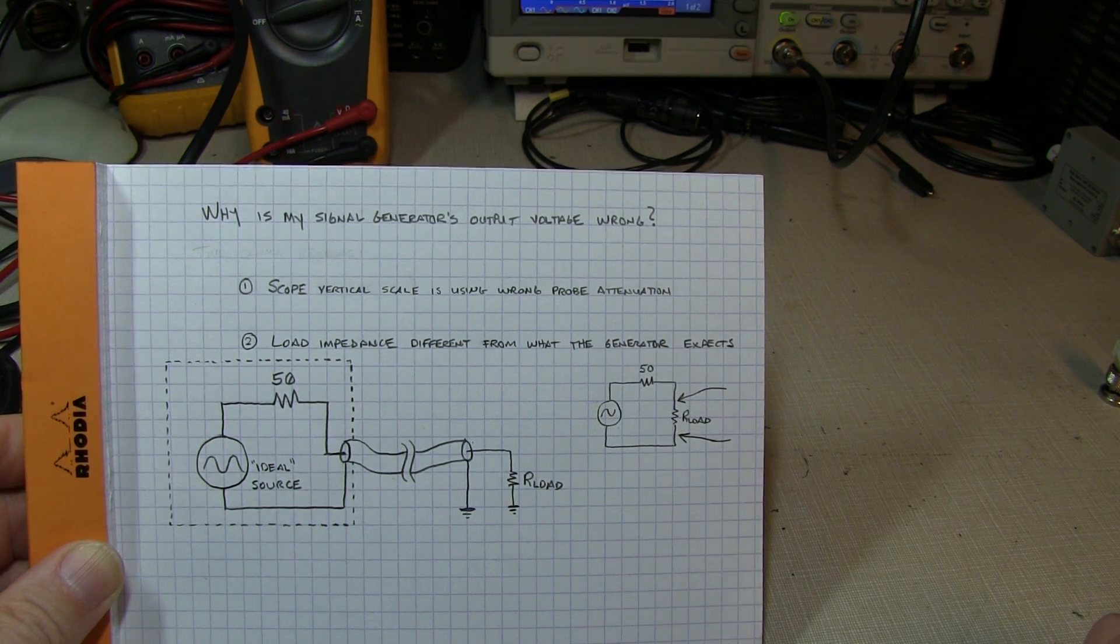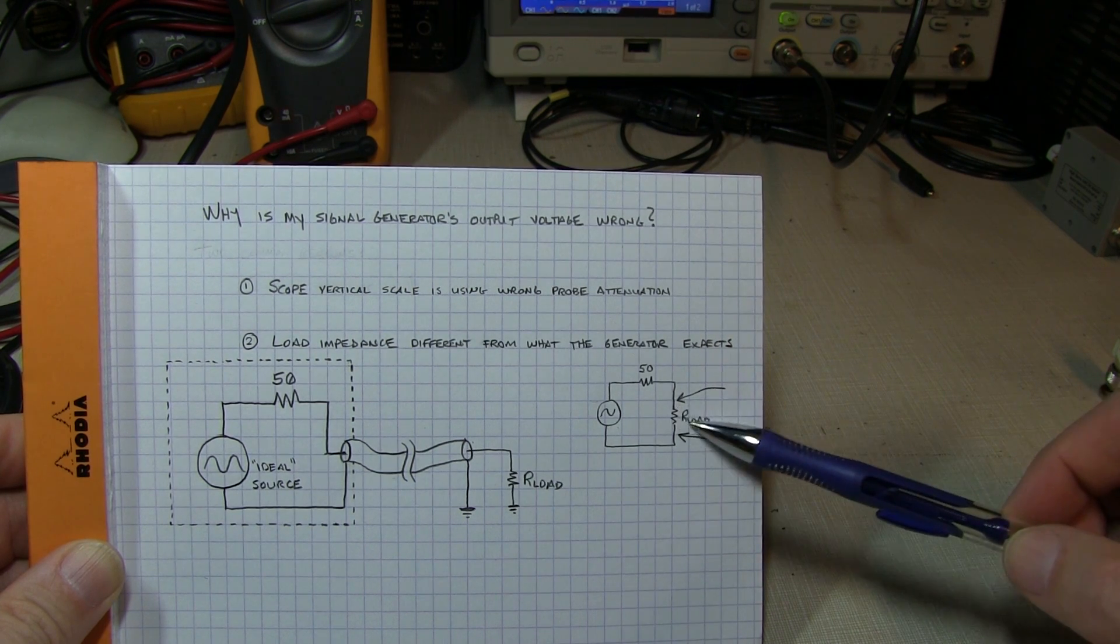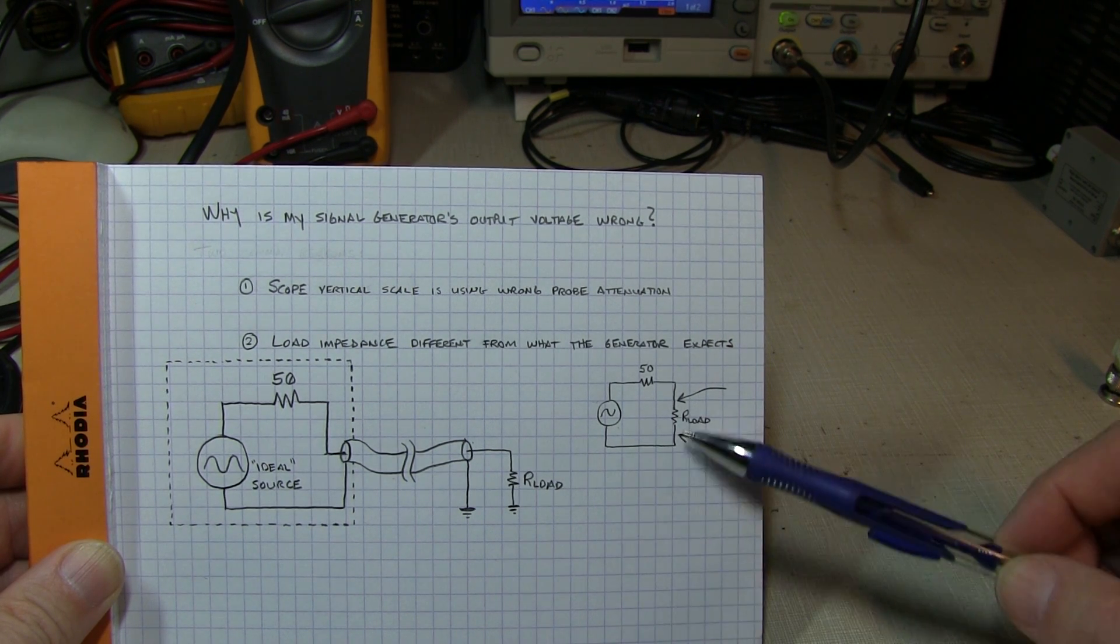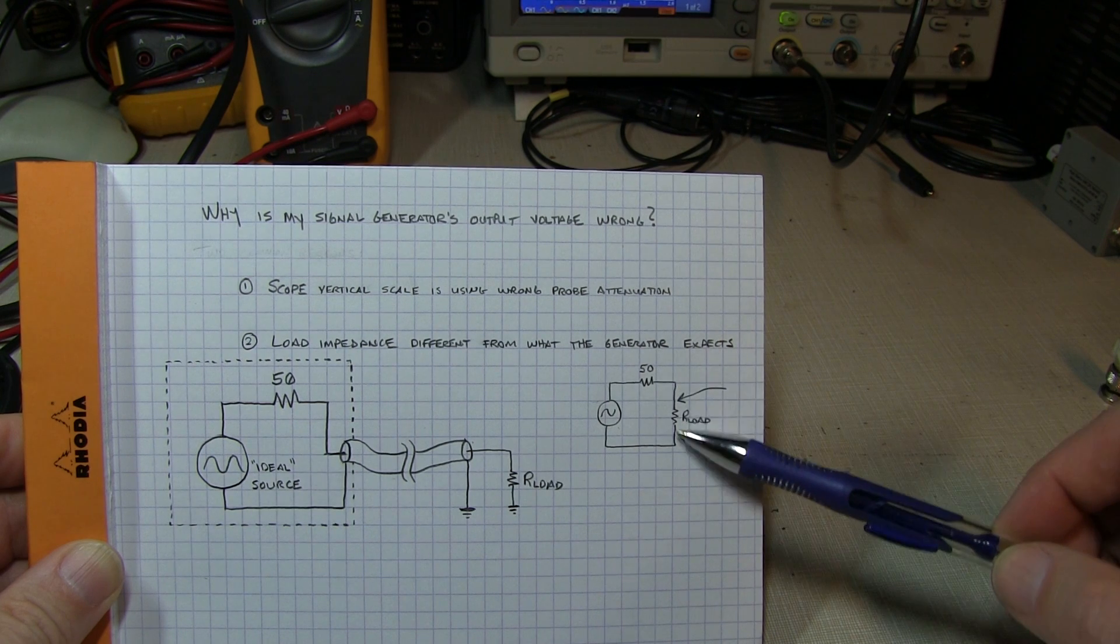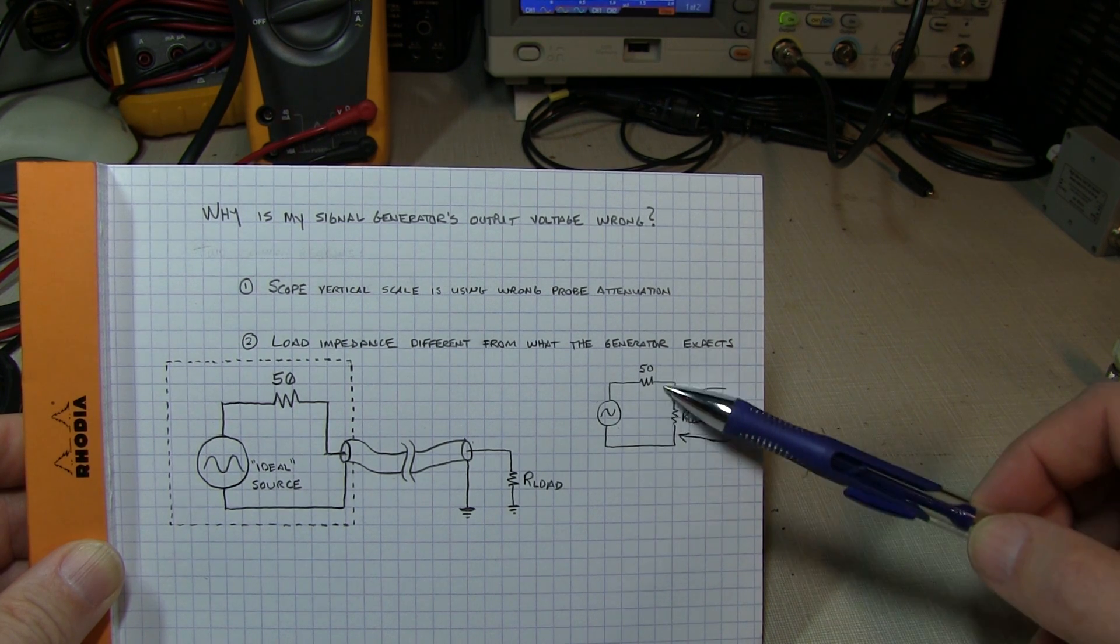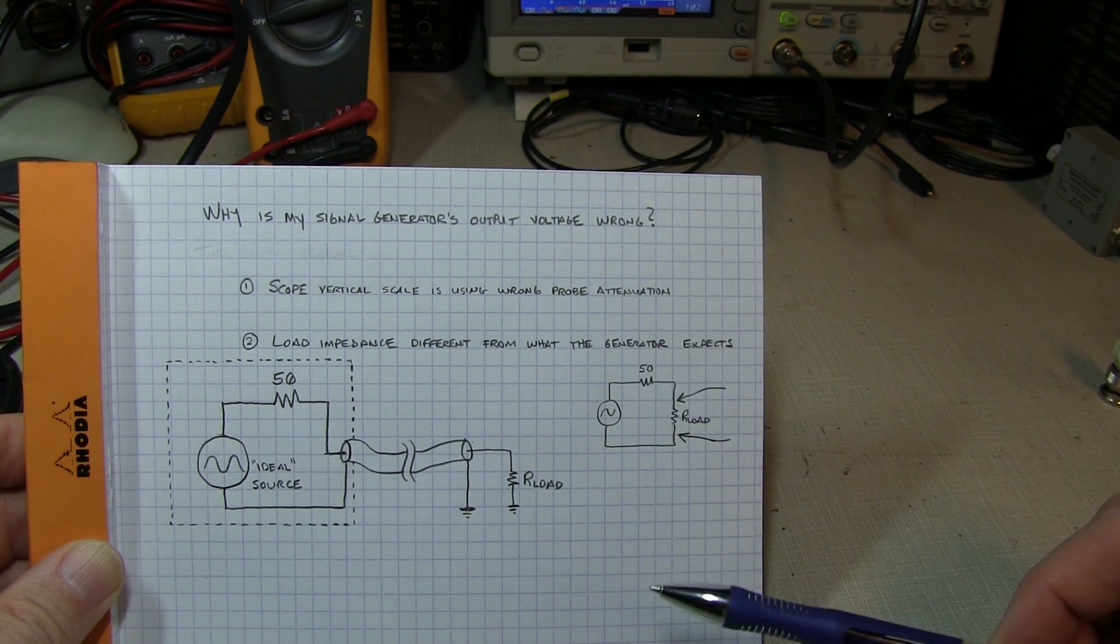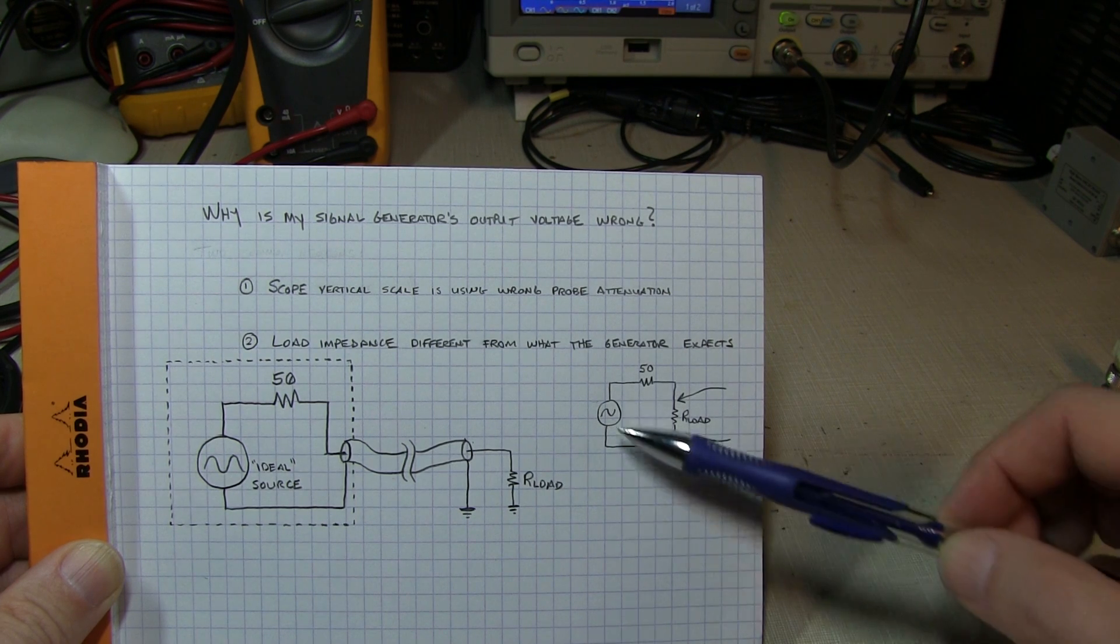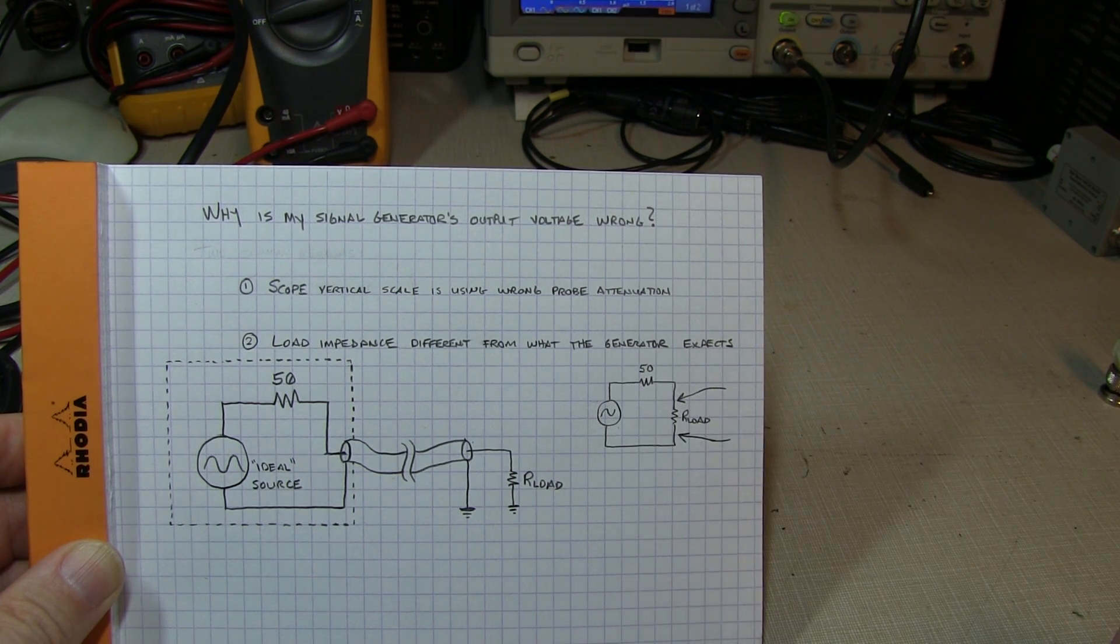So the most common thing that you'd see is that I set the output to one volt peak to peak, but I'm reading two volts peak to peak. And that's because oftentimes the load impedance might be a very high impedance, and therefore this voltage divider works out where there's very little voltage dropped across the 50 ohm resistor.